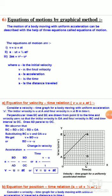Draw AD parallel to OC. We observe that BC is equal to BD plus DC, which equals BD plus OA. Substituting BC equal to v and OA equal to u, we get v equals BD plus u, or BD equals v minus u. Acceleration equals change in velocity divided by time, so a equals BD divided by AD, equals BD divided by OC, equals v minus u divided by t.